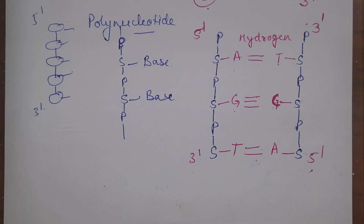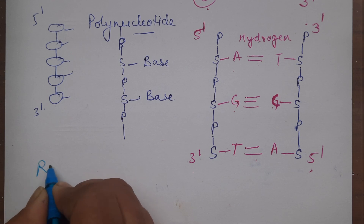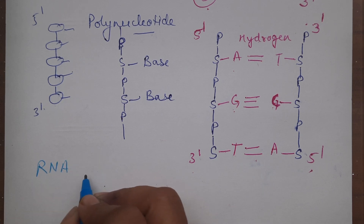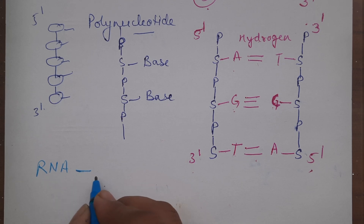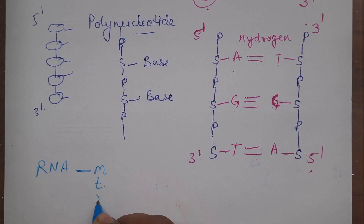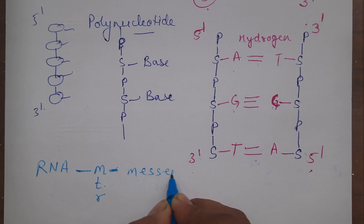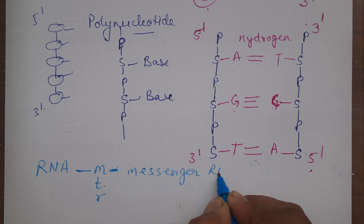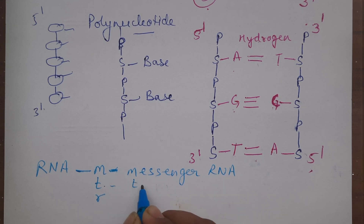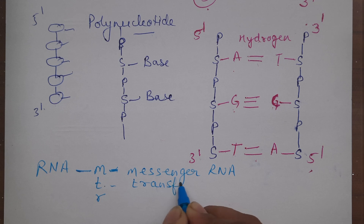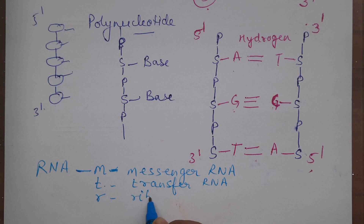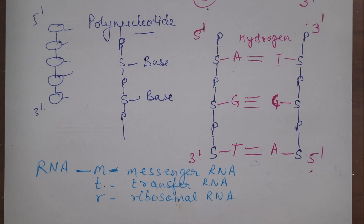One more thing to know is that RNA molecules are of three types — you can remember as MTR: M for messenger RNA, T for transfer RNA, and R for ribosomal RNA.